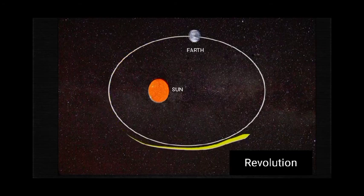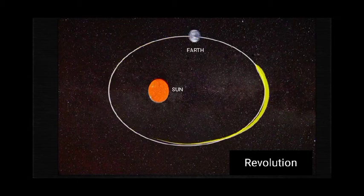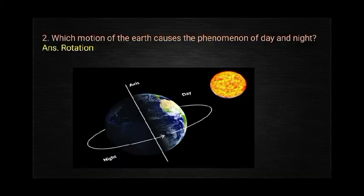The Earth moves annually around the sun along a fixed path — the orbit — and the time taken is approximately 365 days.